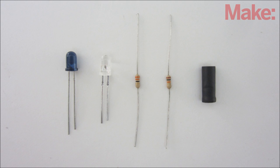To make the sensor you'll need an infrared LED, an infrared photo transistor, two resistors, and a piece of black heat shrink tubing.